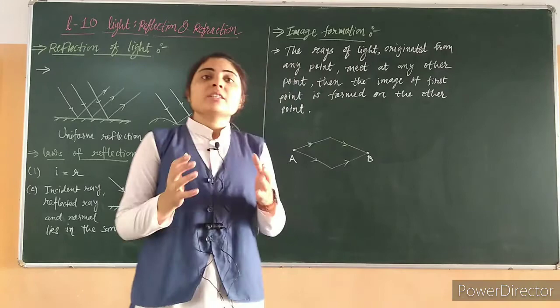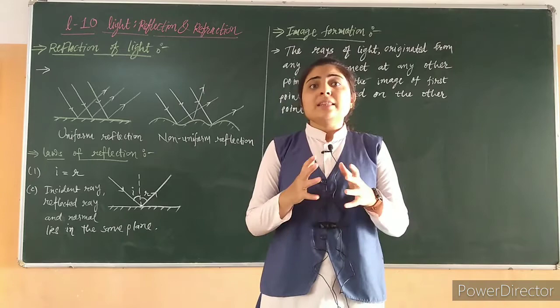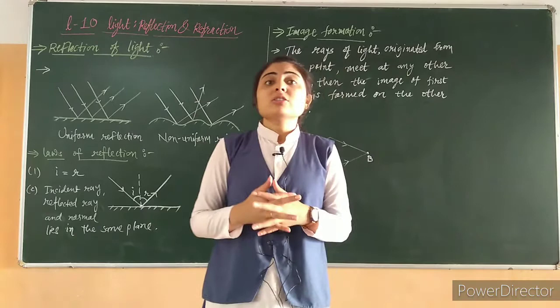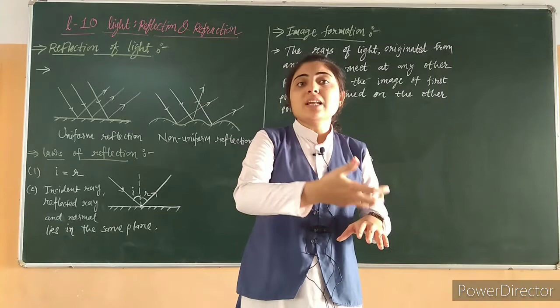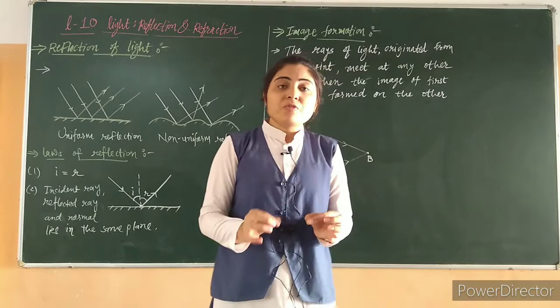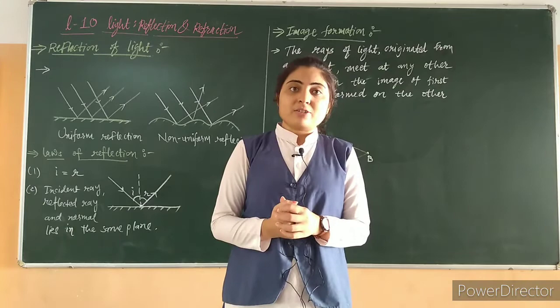What do we mean by reflection of light? Reflection means whenever the rays of light are incident on any surface, that light bounces back. If the surface is not transparent, then the light incident on it — most of the light will bounce back. This phenomenon of bouncing back of light we are calling reflection.